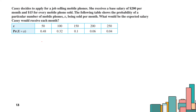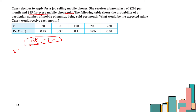Now let's have a problem. Cassie decides to apply for a job selling mobile phones. She receives a base salary of $200 per month and $15 for every mobile phone sold. The table shows the probability of a particular number of mobile phones x being sold per month. We want to find the expected salary. The linear function is E[15X + 200].